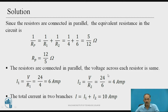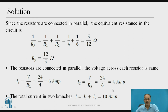Since the resistors are connected in parallel, the voltage across each resistor is the same. Therefore, I1 = V / R1 = 24 / 4 = 6 A. Similarly, I2 = V / R2 = 24 / 6 = 4 A. The total current in the two branches: I = I1 + I2 = 6 + 4 = 10 A.